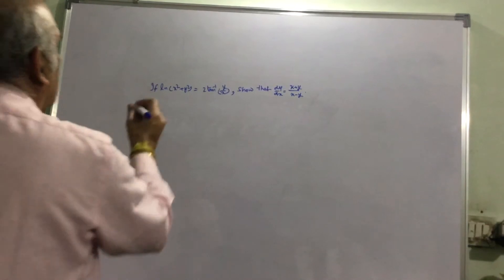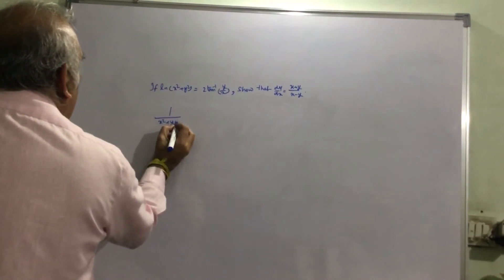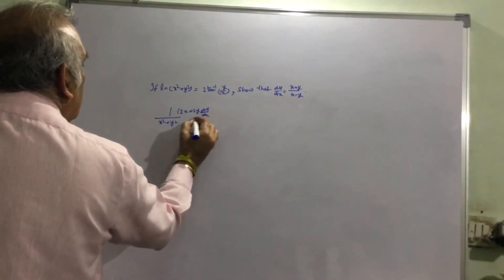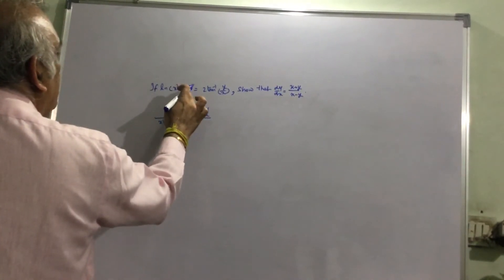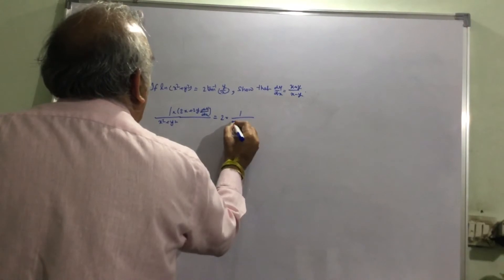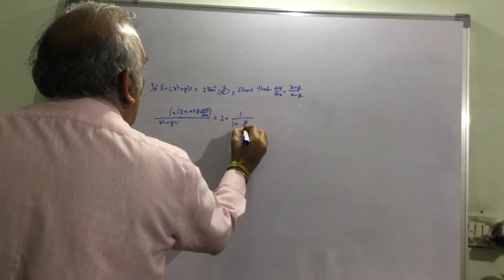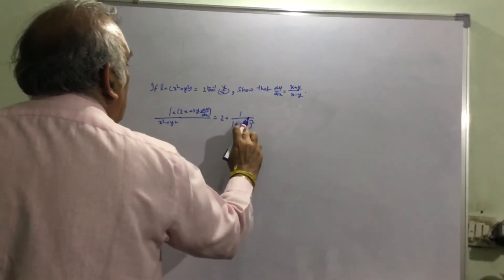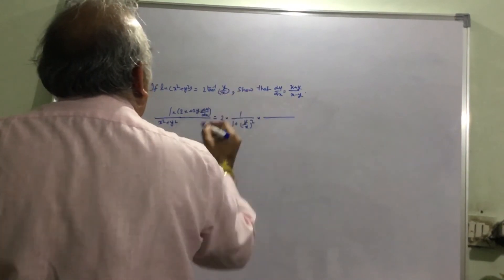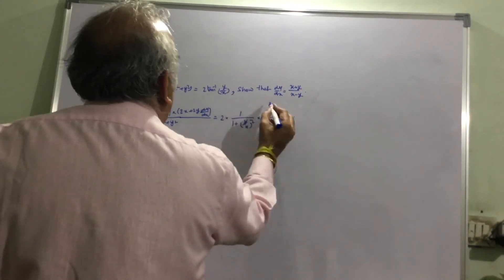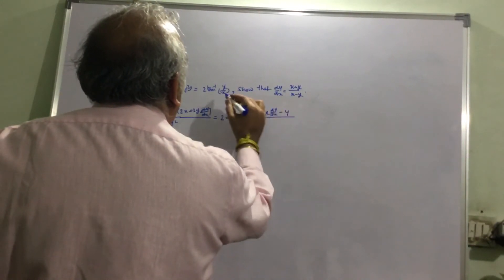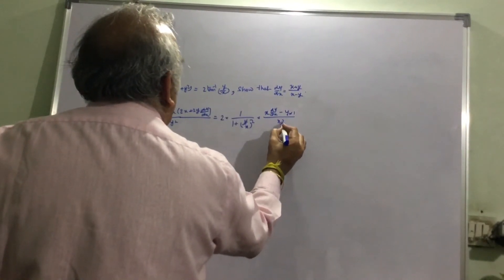We differentiate both sides. On the left side, for log(x squared plus y squared), we get 1 over (x squared plus y squared) times (2x plus 2y dy/dx). On the right side, the derivative of tan inverse uses the formula 1 over (1 plus the argument squared).